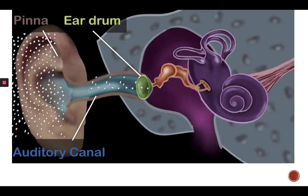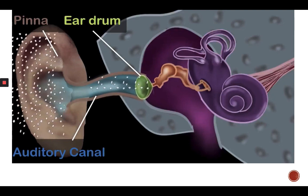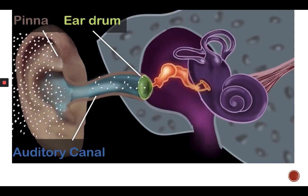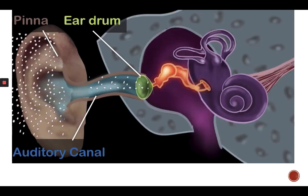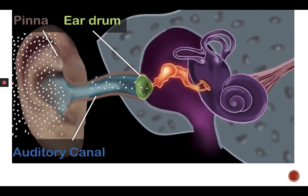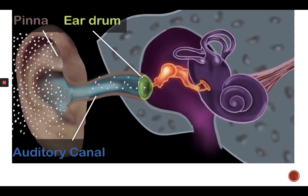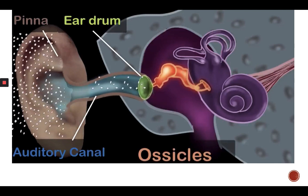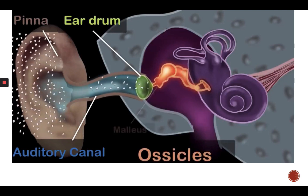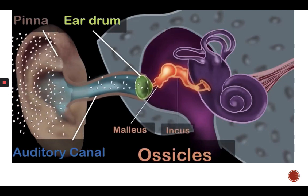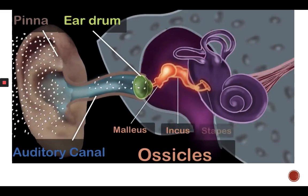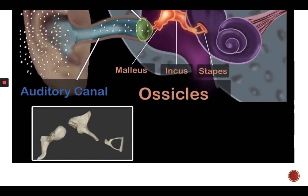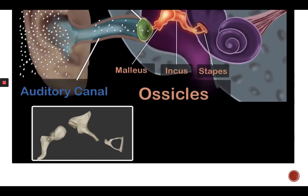This brings us to the middle ear. The middle ear consists of the three tiniest bones of the human body, together called the ossicles. They have pretty cool names: the malleus, the incus, and the stapes, and here is an actual picture of these three bones.